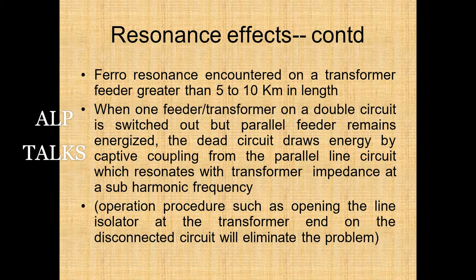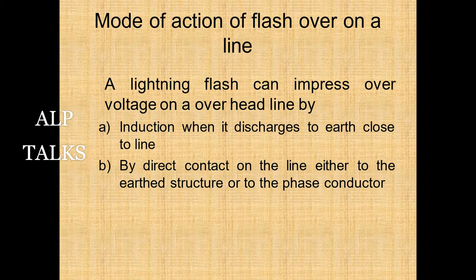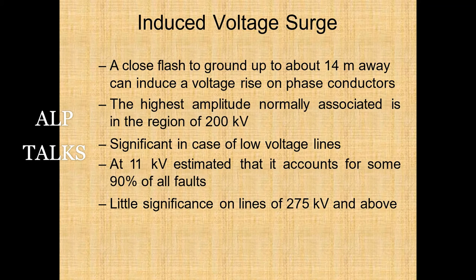A lightning flash can impress overvoltage on a line by induction when it discharges to air close to the line, or by direct contact either to the earth structure or to the phase conductor. A close flash approximately 14 meters away can induce a voltage rise on phase conductors; the highest amplitude normally associated is around 200 kV. This is significant for low-voltage lines at 11 kV — estimated to account for almost 90% of all faults — but has little significance on lines of 275 kV and above.